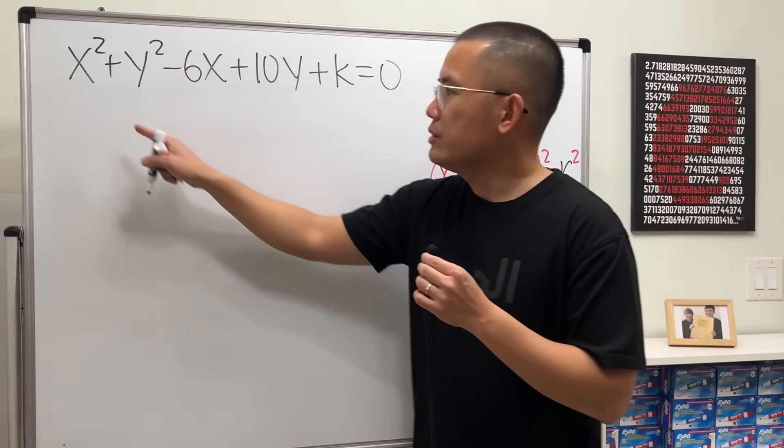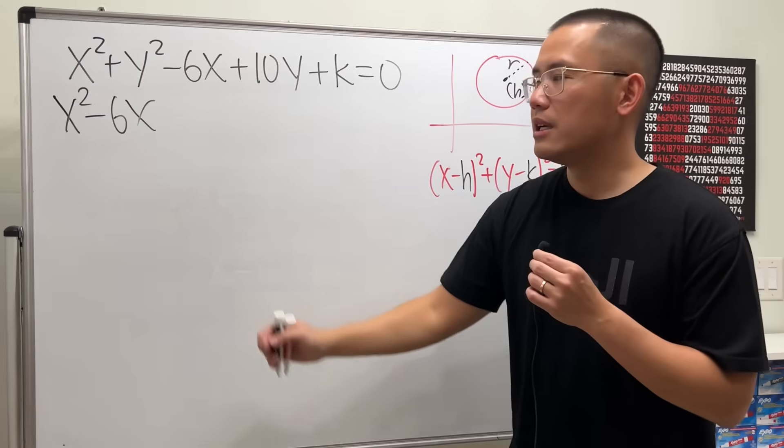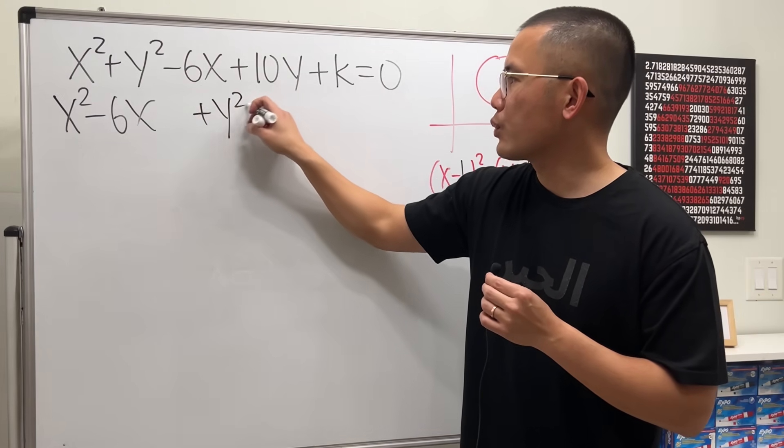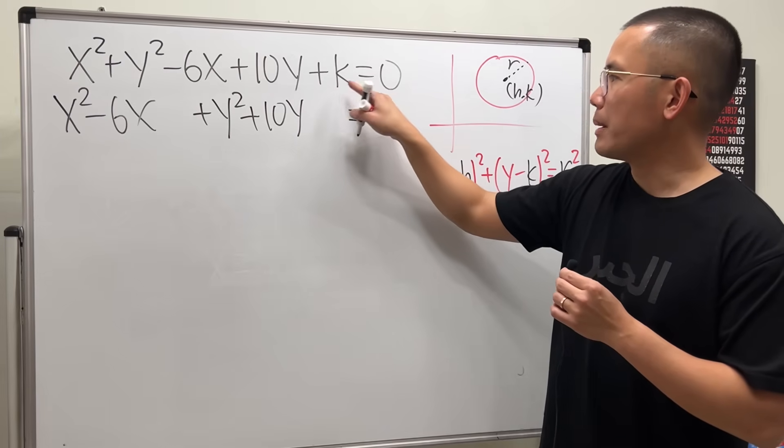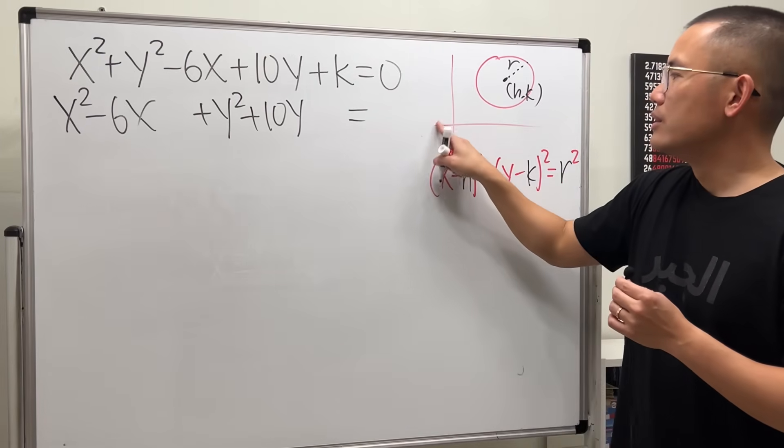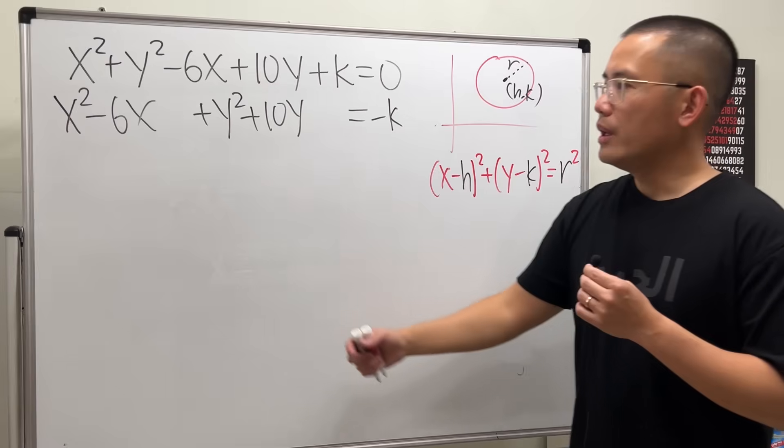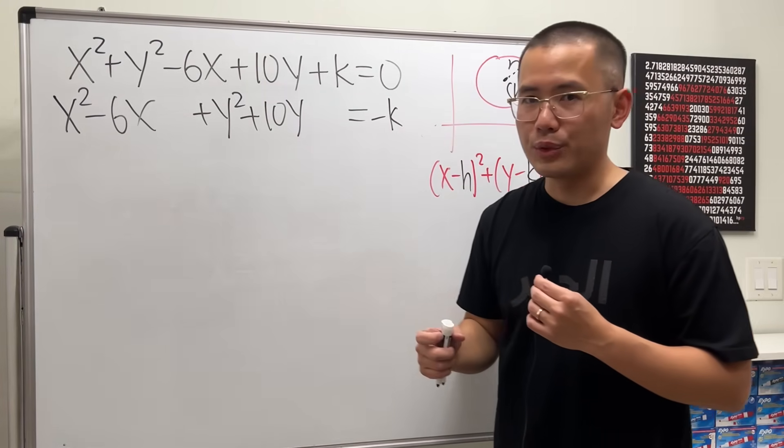To do so, I'm going to keep x squared and then minus 6x together like this. Leave a space. Continue with the plus y squared plus 10y. Leave a space. I'll put the k to the other side. So we will get minus k. Now we will have to complete a square for x and also for y. And this is how you do it.